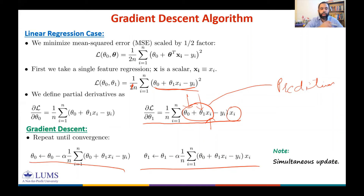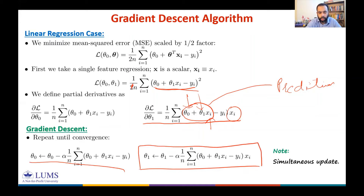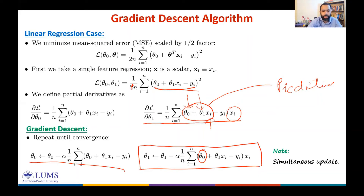When updating θ₁, you also need θ₀. But in any iteration, if you update θ₀ first and then move to updating θ₁, you have already updated θ₀. However, you must not use the updated value of θ₀ while updating θ₁.